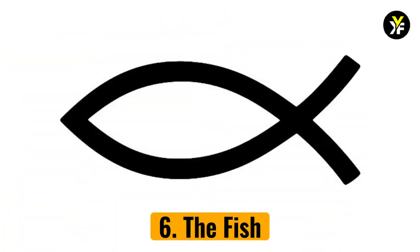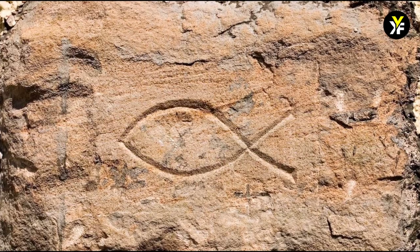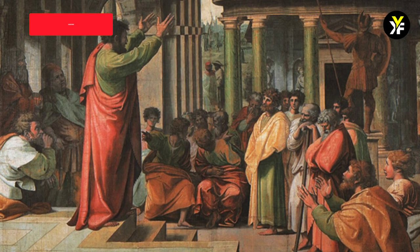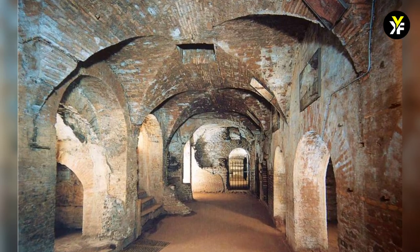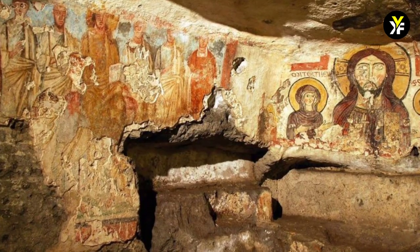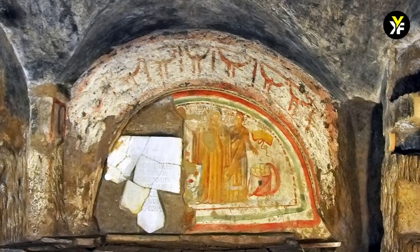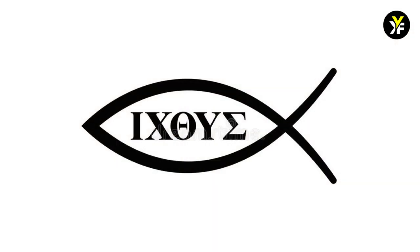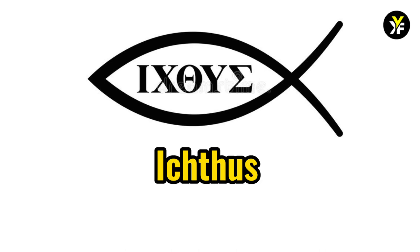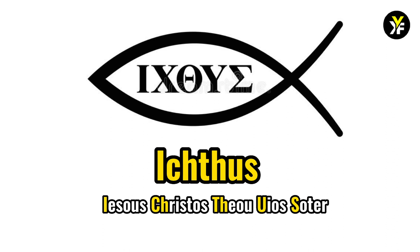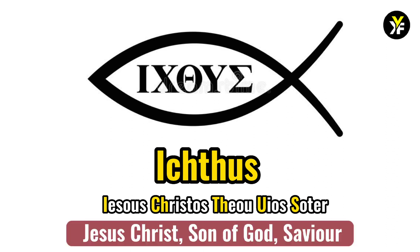Number 6: The Fish. The fish is one of the oldest Christian symbols. Christians used it to identify themselves and each other, especially during times of persecution. It is frequently discovered in the Roman catacombs, a secret meeting place for Christians during the time when the Romans persecuted them for their faith. The fish is based on the first letters of the Greek words for Jesus Christ. Ichthus is the Greek word for fish and also an acronym: Jesus Christus Teo Hueios Soter, which translates to Jesus Christ, Son of God, Savior in English.